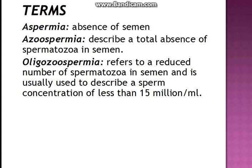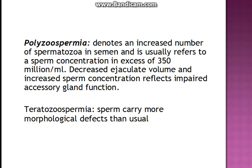The relevant terminology: aspermia means absence of semen entirely. Azoospermia means there is semen but a total absence of spermatozoa in it. Oligozoospermia means a reduced number of spermatozoa — usually less than 15 million per ml. Polyzoospermia means an increased number, more than 350 million per ml. Teratozoospermia refers to sperms carrying morphological defects in excess of the usual number.